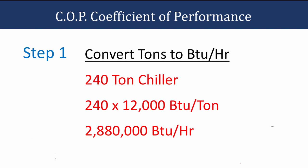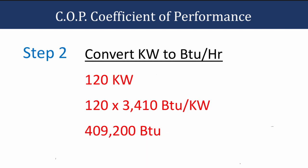We have a 240-ton chiller. We know there are 12,000 BTUs for every ton, so 240 times 12,000 gives us 2,880,000 BTUs per hour of output. Now we convert the input power — we're using 120 kilowatts to produce that output. We take our kilowatts times the conversion factor of 3,410 BTUs per kilowatt, which gives us 409,200 BTUs per hour.